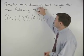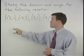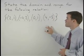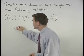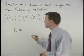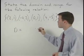The domain is the set of all x-coordinates for those ordered pairs. So in this case, the domain, or D, is {2, -4, 0, and 4}.